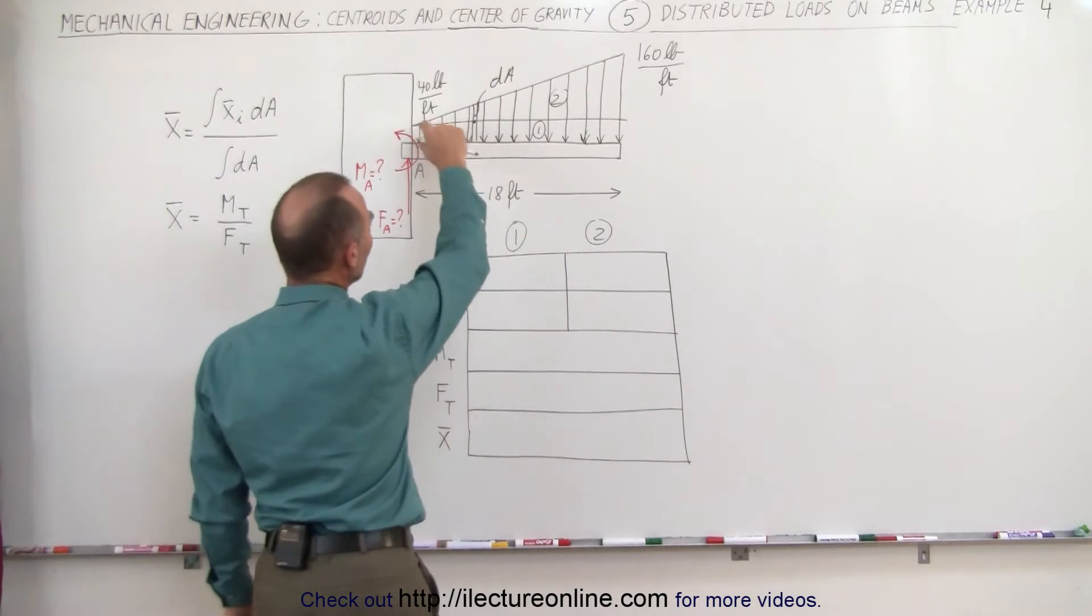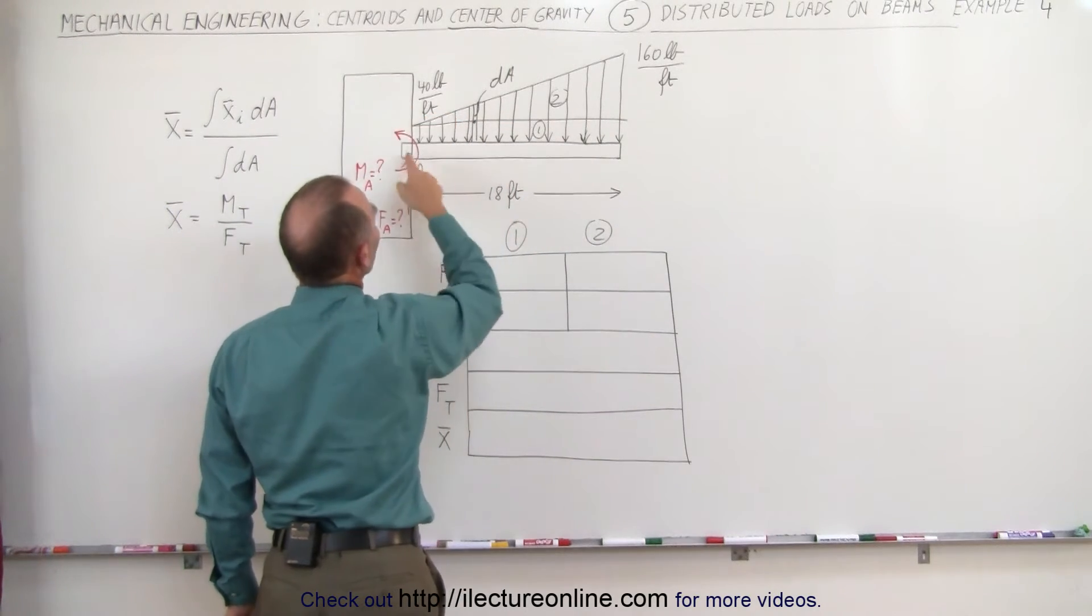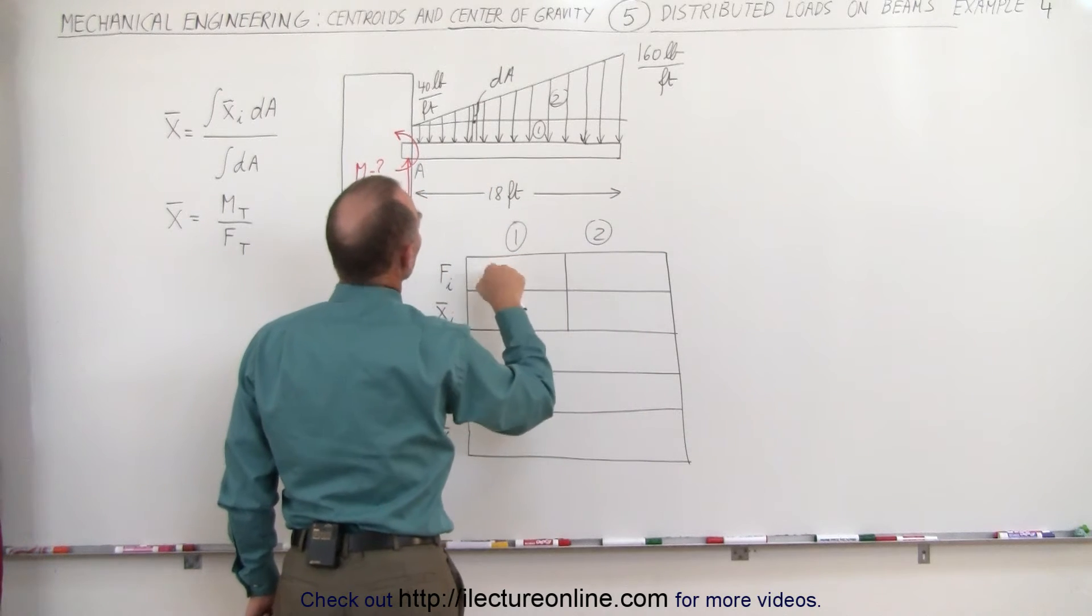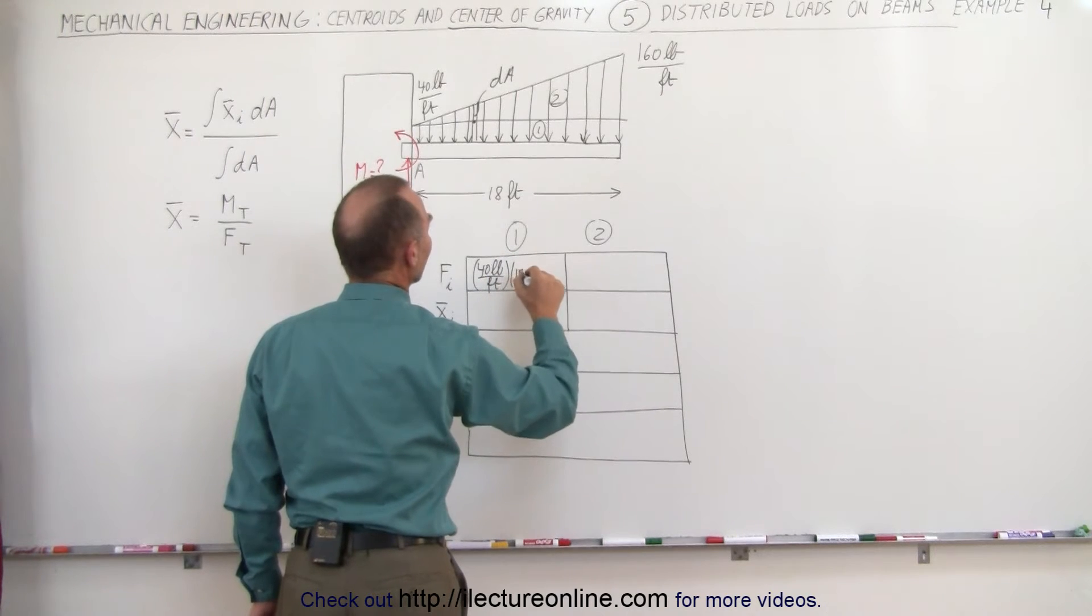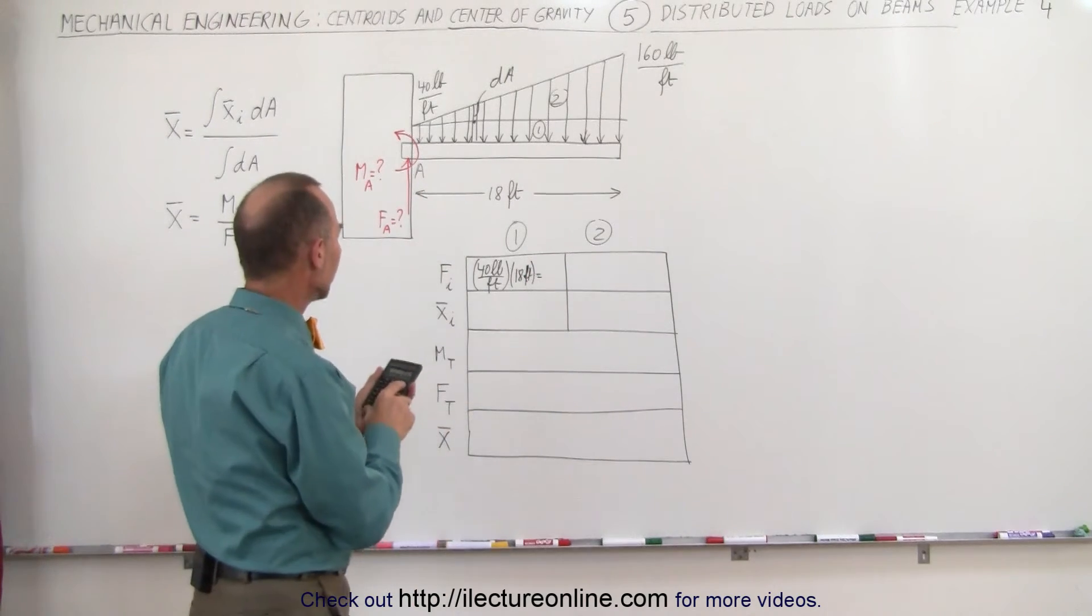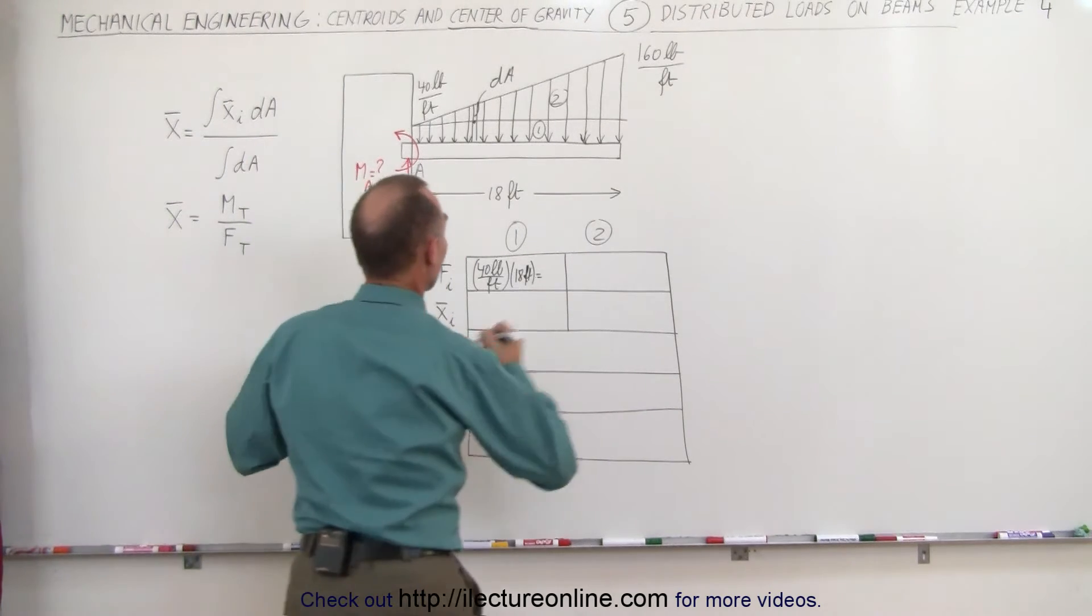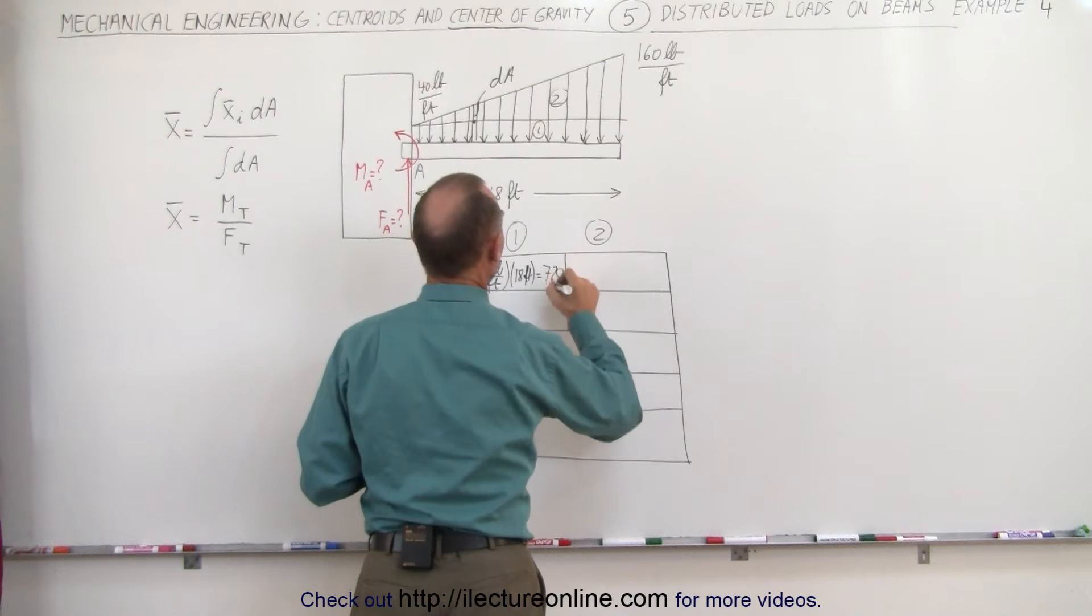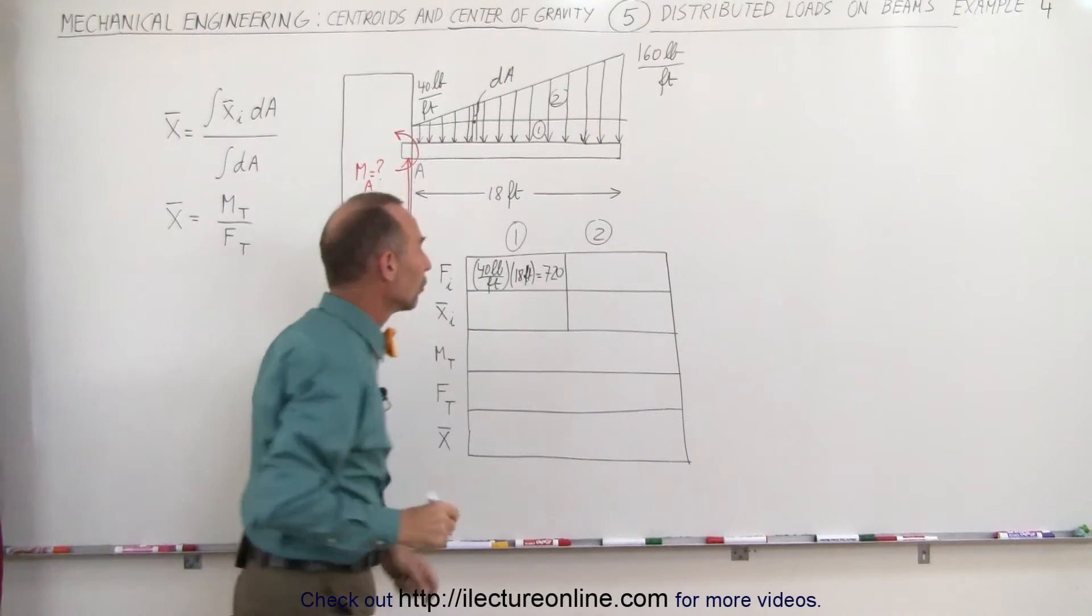First, we have a rectangular section here. The height is 40 pounds per foot and the length is 18 feet, so this becomes 40 pounds per foot multiplied times 18 feet. 40 times 18 is 720 pounds, the load provided by the rectangular portion of the load distribution.